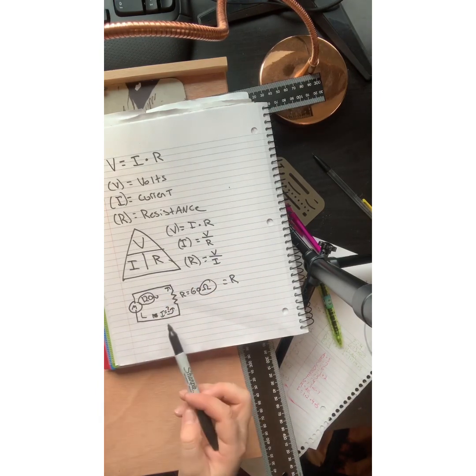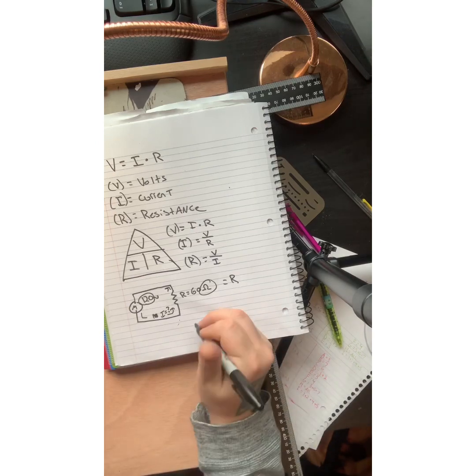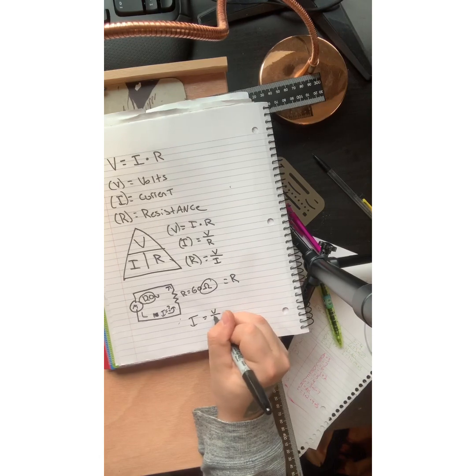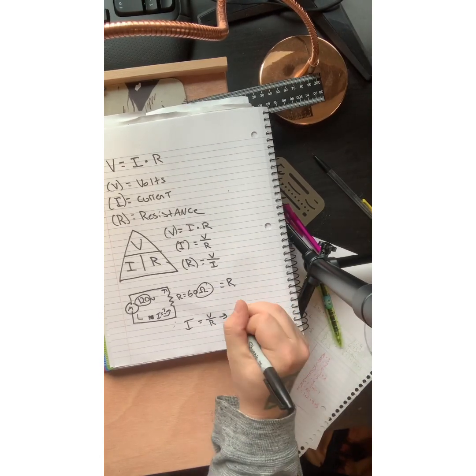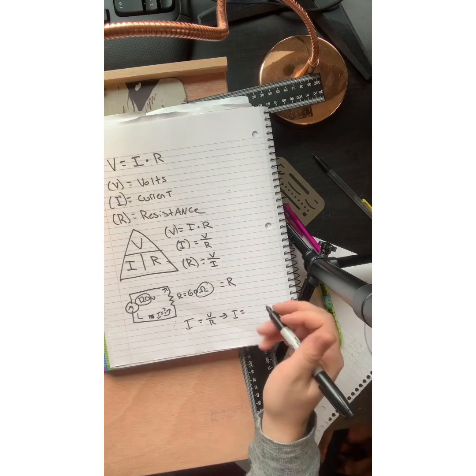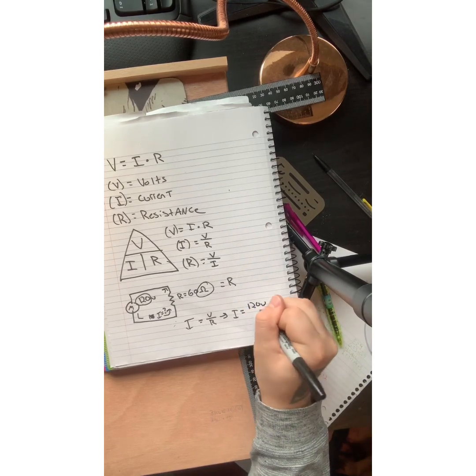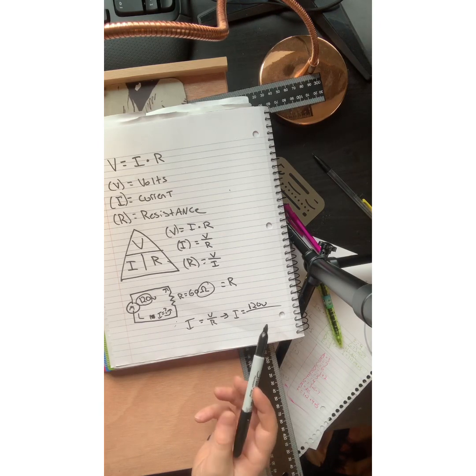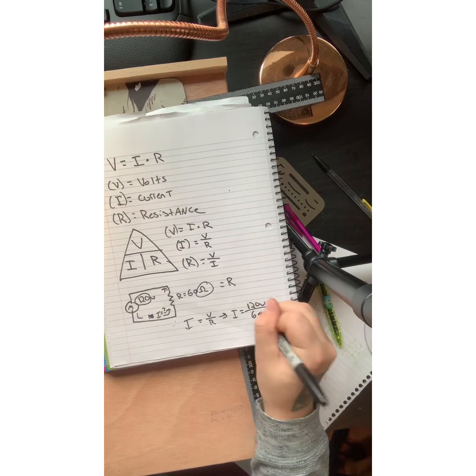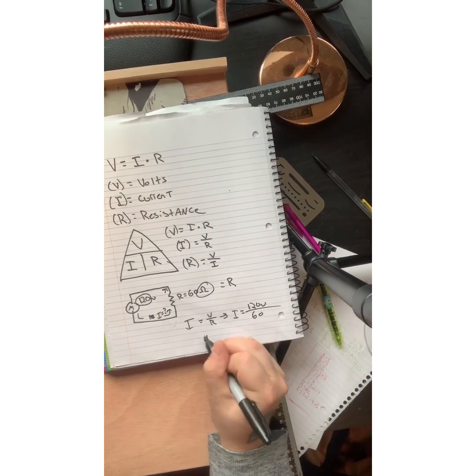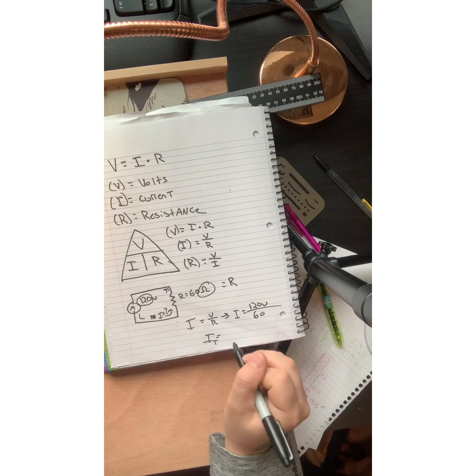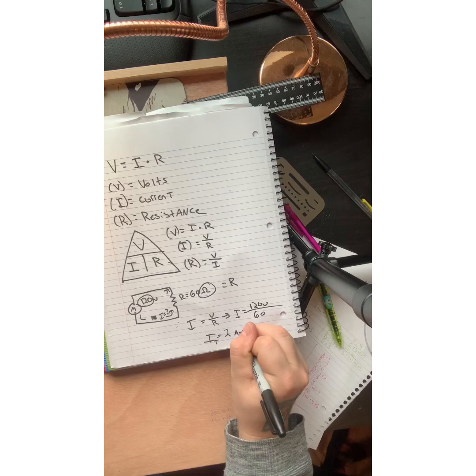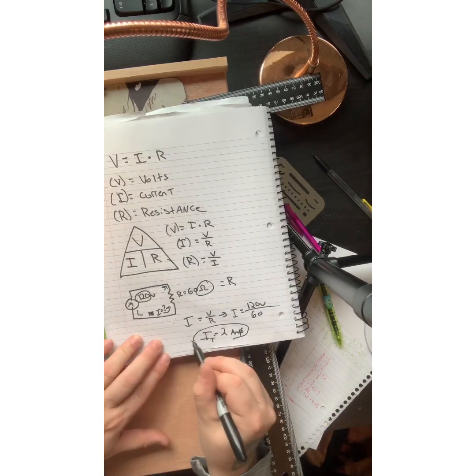So you are going to be looking for your current here based on this equation. So we can go back up here and we know that I equals V over R. Therefore I is going to equal, what did we have? 120 volts. That's what you're going to see mostly, especially in America, divided by your resistance here, which I made 60, just so we can do some quick math. So now you know that your current total is going to be two amps.